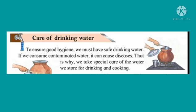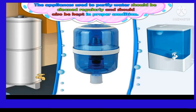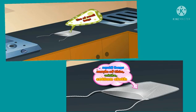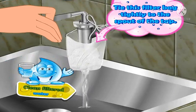That is why we take special care of the water we store for drinking and cooking. The appliances used to purify water should be cleaned regularly and kept in proper condition. In order to make filtered water, we make use of small bags made of thin white cotton cloth filled with clean cotton. Tie this filter bag tightly to the spout of the tap. In this way, we get clean filtered water.